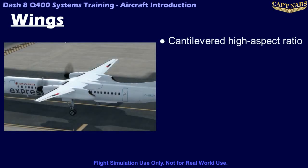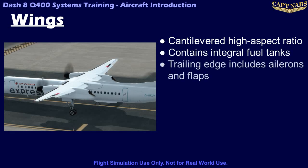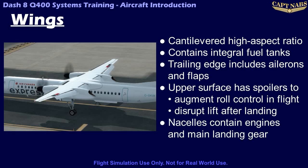The Q400 has a cantilevered high wing with a high aspect ratio. The wing contains integral fuel tanks and the trailing edge features ailerons and flaps for aircraft control. Additionally, spoilers on the upper surface of the wing provide additional roll control authority and help to reduce lift on landing. Each wing also has a nacelle containing an engine and the main landing gear.